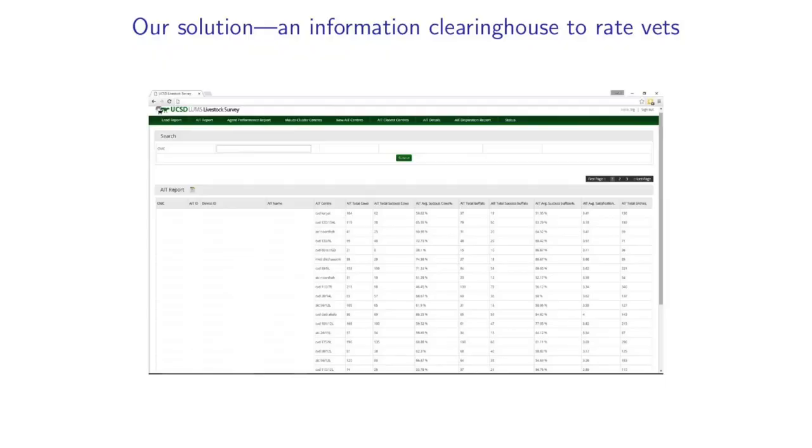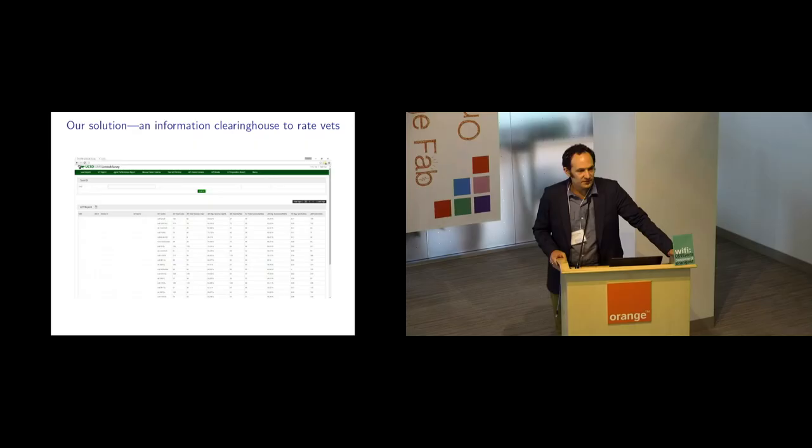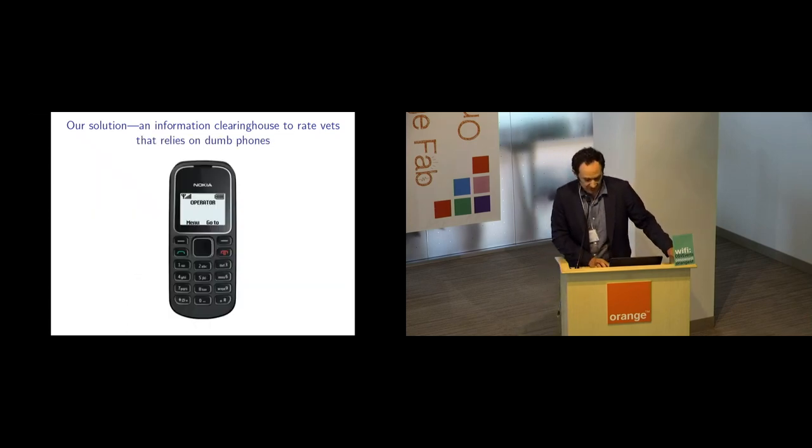This is exactly what we brought to rural Punjab Pakistan: an information clearinghouse that crowdsourced the collection of information on performance of government veterinarians to the citizens they were providing services to, aggregated this information automatically and continuously, and then provided this information back to these same consumers. Now the reason this picture doesn't look very pretty is because all of this was built on dumb phones. This is a population in rural Pakistan, in rural Punjab, that's mainly illiterate and smartphone penetration is very low. So we did this all built around a call center where we had real-life agents having very short phone call conversations with farmers to collect and transmit information.